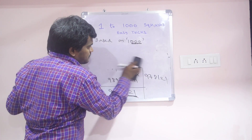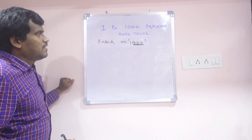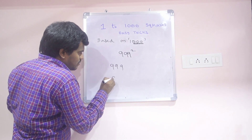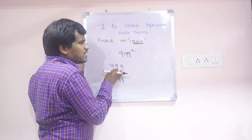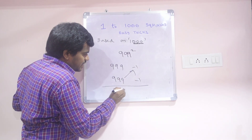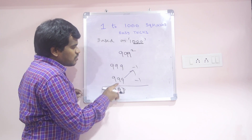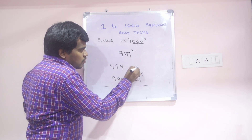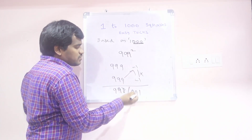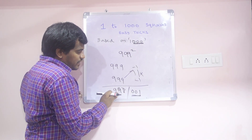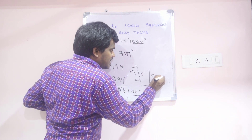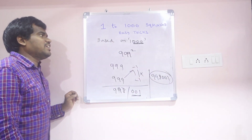Another example based on 1000: 999 square. Write 999 two times. Near to 1000, how much less? Minus 1, minus 1. 999 minus 1 is 998. Slash — minus 1 times minus 1 is plus 1. But based on 1000 we need 3 digits, so write 001. No need to multiply any number. So 998001 is the answer for 999 square.